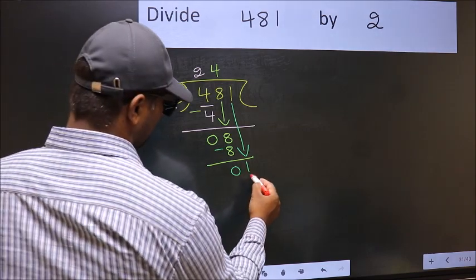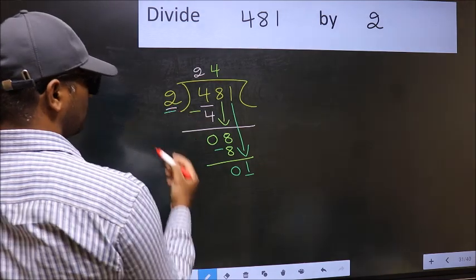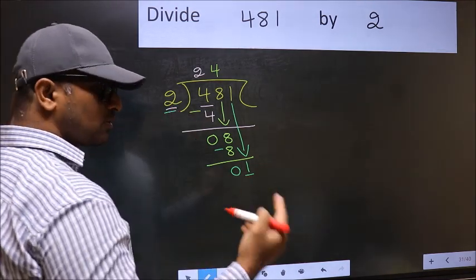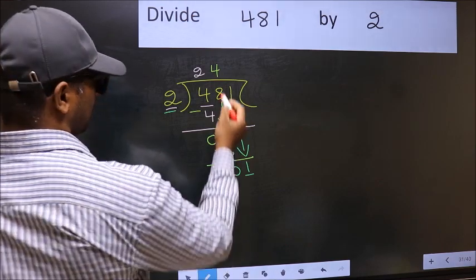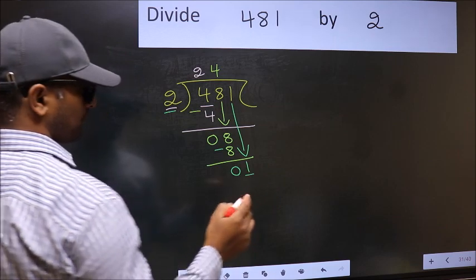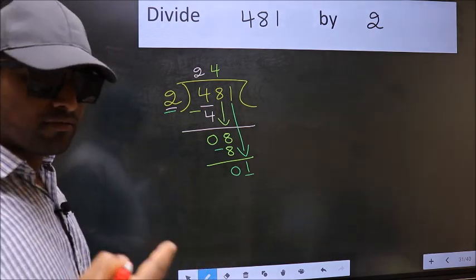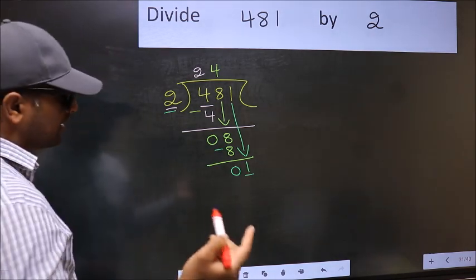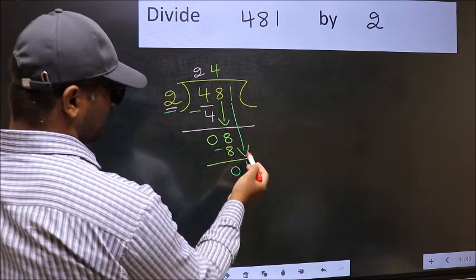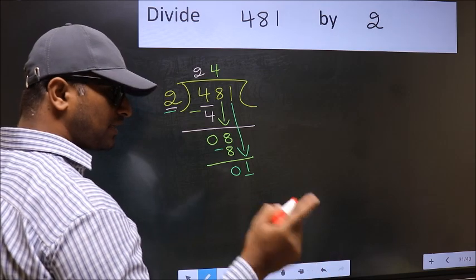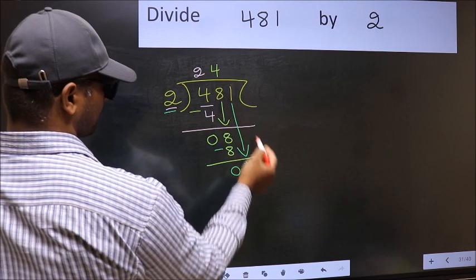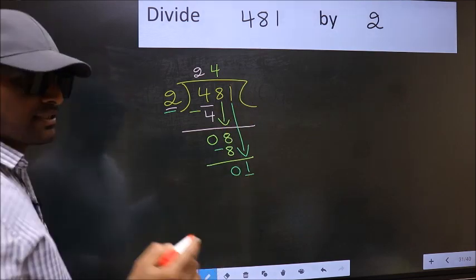Here we have 1 and here 2. 1 is smaller than 2. So what many do is they directly put a dot and take 0 here, which is wrong. Why is it wrong? Because just now you brought this number down, and in the same step you want to put a dot and take 0 here, which is wrong.